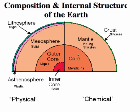Three chemical layers, five physical layers, and you can see the core chemically is the same as the two cores physically. The mesosphere and basically the asthenosphere is the mantle chemically, and the crust is basically part of the lithosphere.